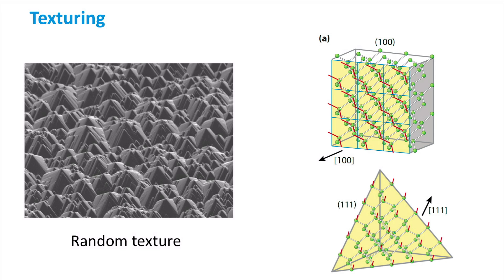When a 1-0-0 wafer is etched, the 1-0-0 surface will be etched away while the 1-1-1 surface facets will remain. Therefore, we obtain a wafer with a pyramid structure consisting of 1-1-1 facets only, and the wafer will exhibit a random texture.